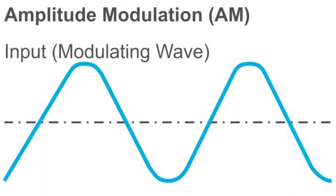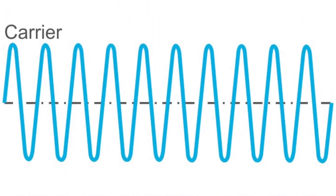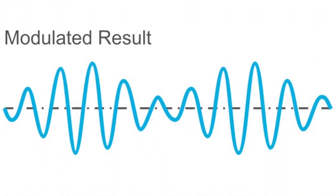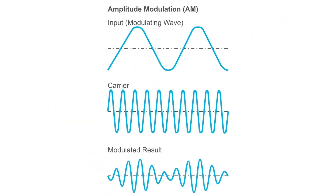We can tweak the height of the carrier. If we create an input signal whose height varies with the loudness of our voice and add this to the carrier, then the carrier's amplitude will change corresponding to the input signal being fed into it. This is called amplitude modulation, or AM.